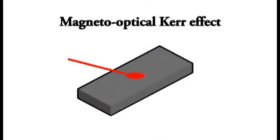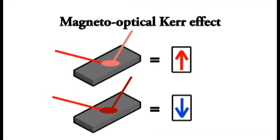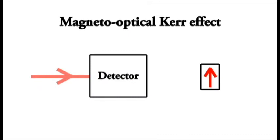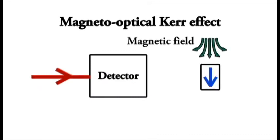When the laser hits the sample, it interacts with the material. The brightness of the reflected laser depends on which direction the magnet is pointing. By monitoring the laser brightness at the detector, we can experimentally distinguish the two magnet directions and determine the magnetic field required to switch the magnet.